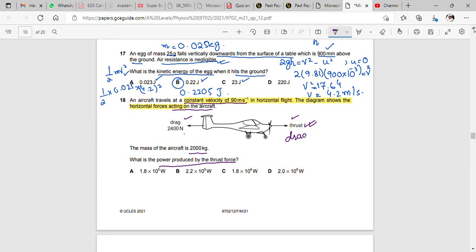How do we consider it? The constant velocity is the first thing. The drag force is the thrust force. The thrust force is equal to 2400 newtons.